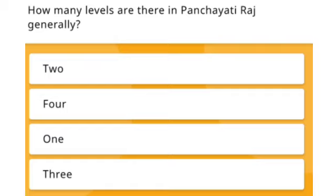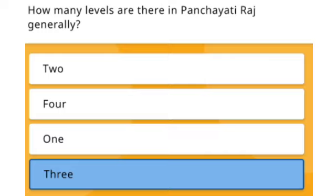The next question: how many levels are there in Panchayati Raj? Generally — Option 1: 2. Option 2: 4. Option 3: 1. Option 4: 3. The right answer is Option 4 — 3.